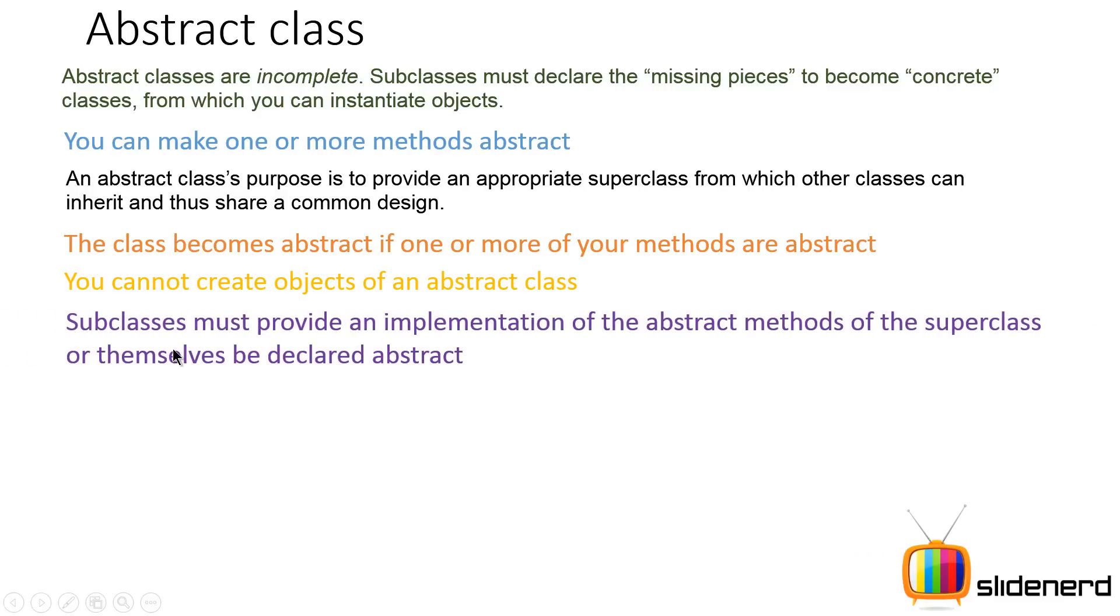Now subclasses must provide an implementation of the abstract methods or themselves be declared as abstract. So in other words, it is like putting a gun on the subclass head and say, you must implement this method, otherwise you will be abstract or you will be killed kind of stuff. So that's one way of understanding that.